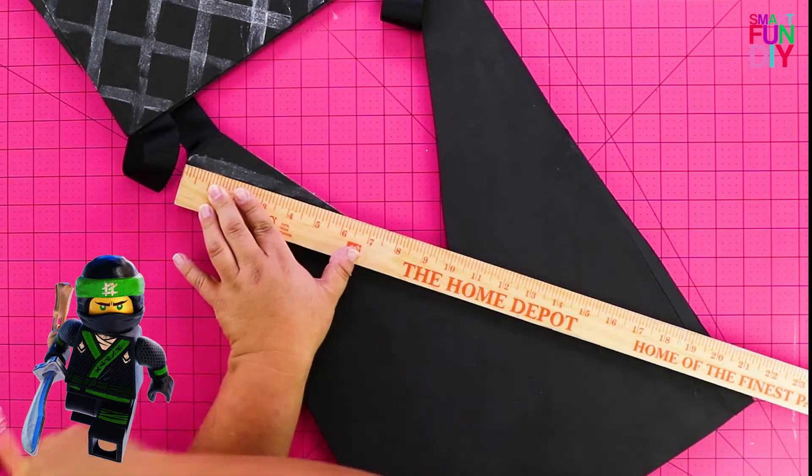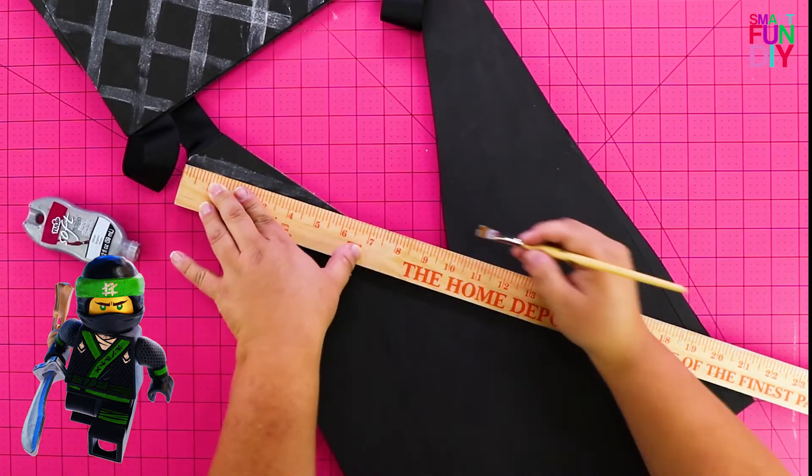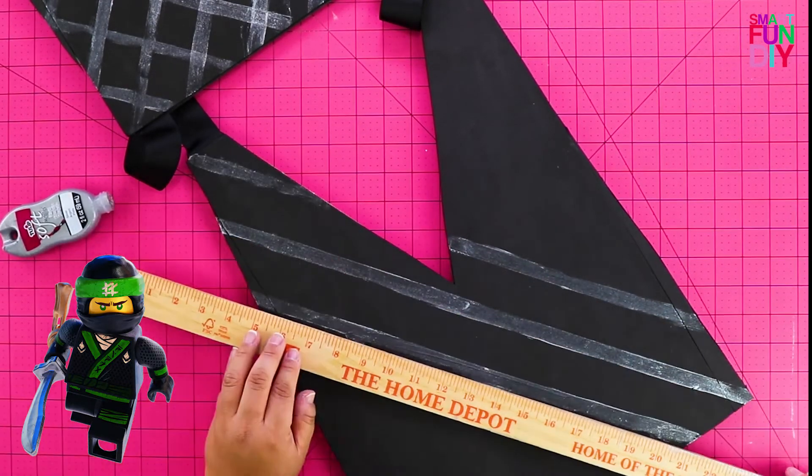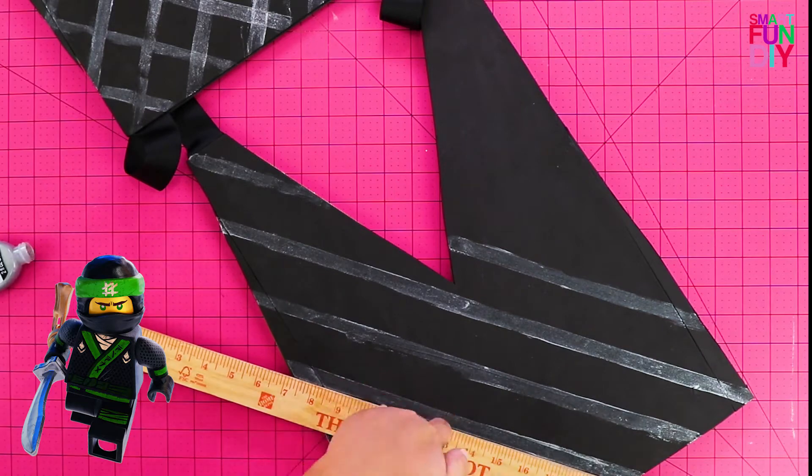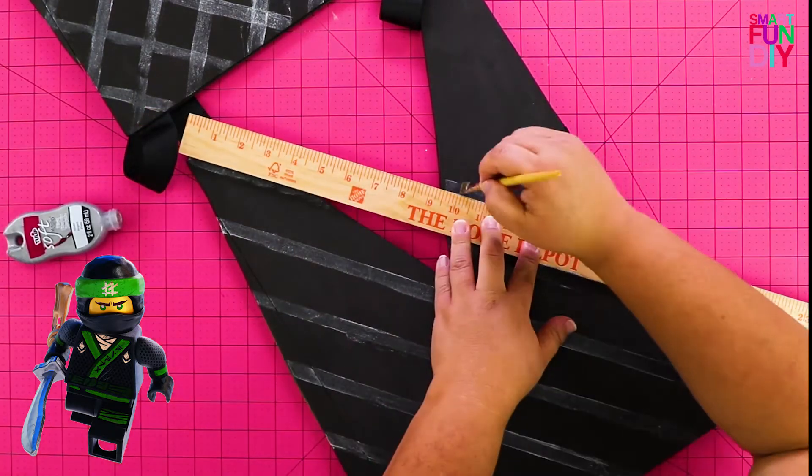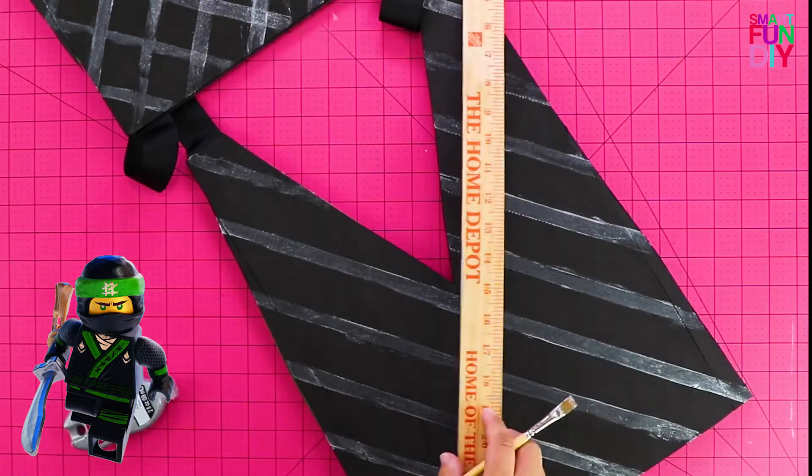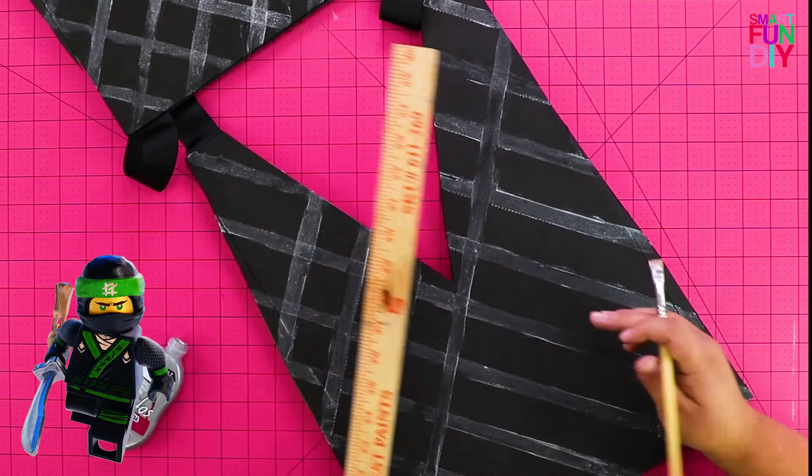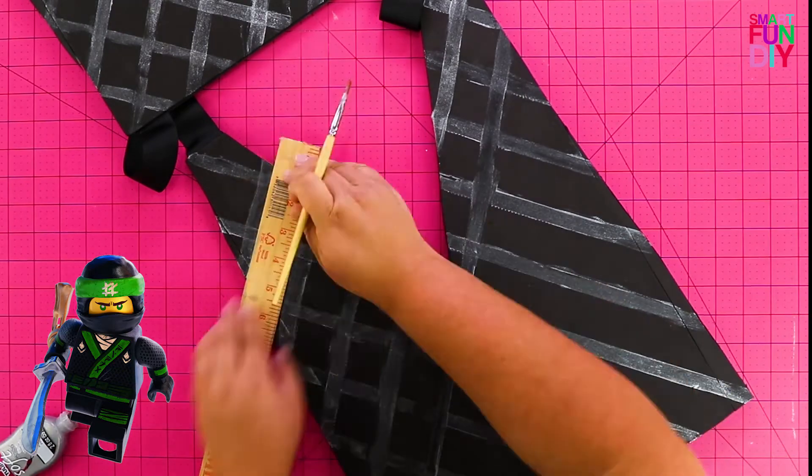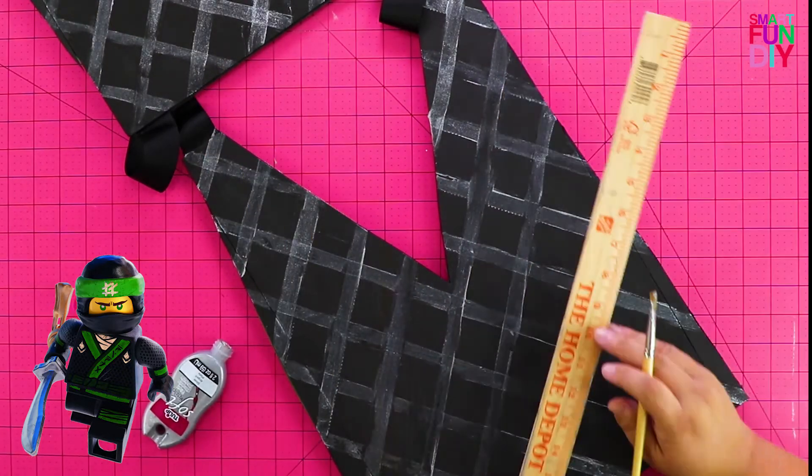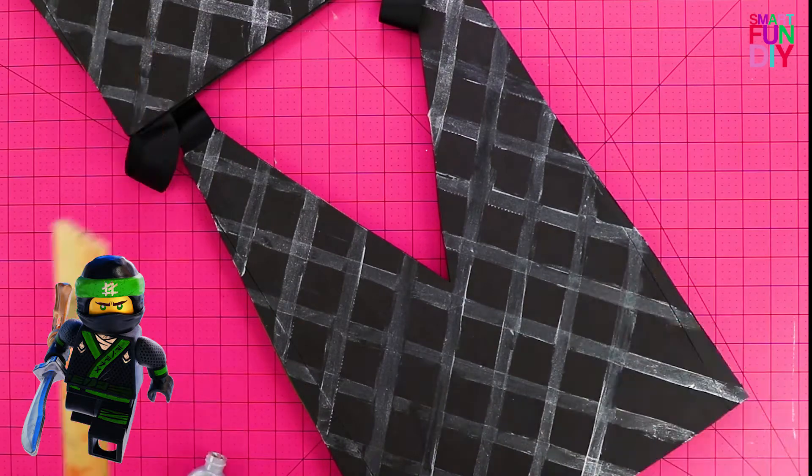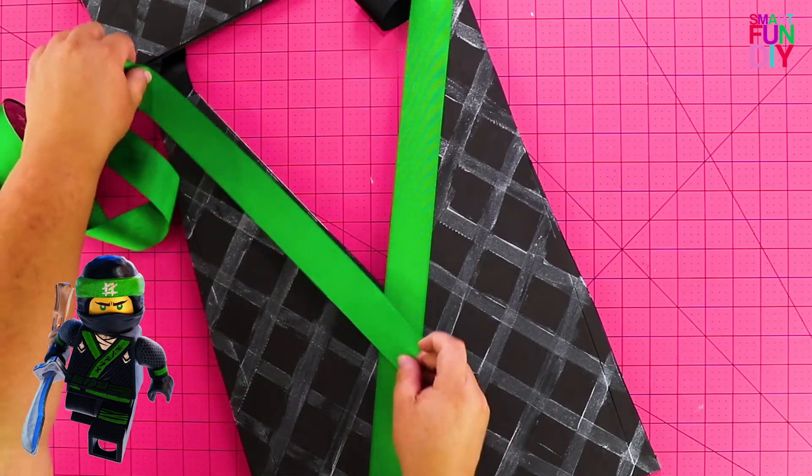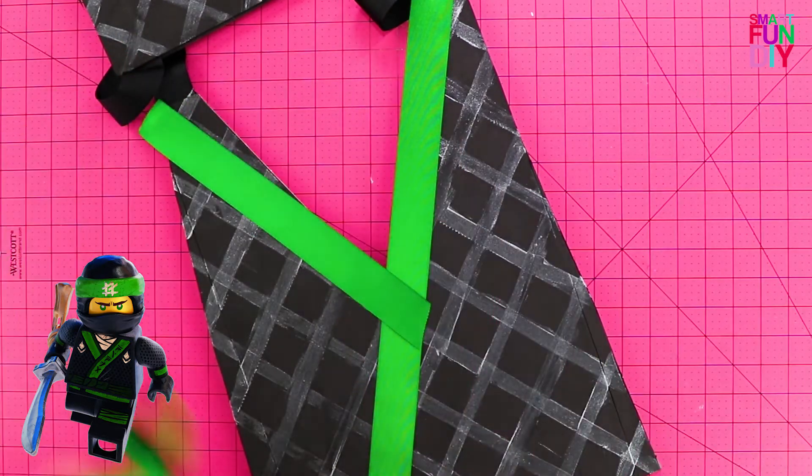Once that is dry, we're going to go in and add this detail to the costume. Looking at the image of Lloyd slash the green ninja, he has this silver line detail, it's kind of like almost a scale type, it looks like scales a little bit on his outfit. To get that look, I'm just taking a yardstick and painting silver stripes on either side of it. It doesn't have to be perfect, I wanted this to look a little bit distressed and so just brushing on some silver paint worked great for that.